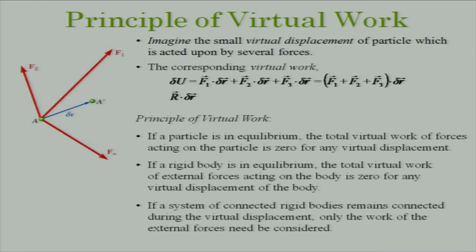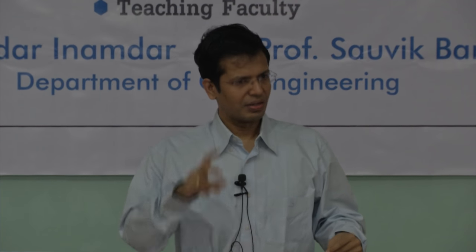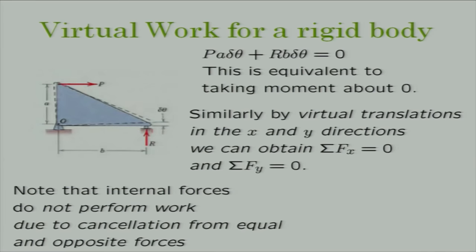Going one step further: for a system of rigid bodies connected by links, if we provide virtual displacements consistent with the linkages — meaning we don't break the constraints — then for any virtual displacement, if the entire set of rigid bodies is in equilibrium, the virtual work is zero. Let's take a very simple example: a rigid body hinged at point O with a roller support at the other point. We apply force P and ask what reaction is produced.